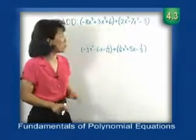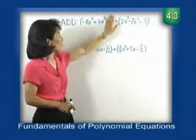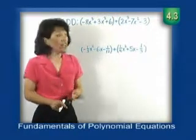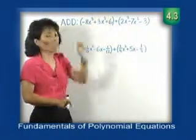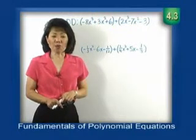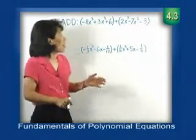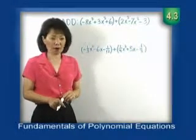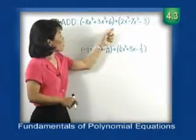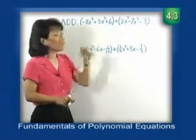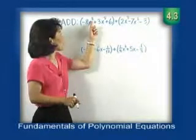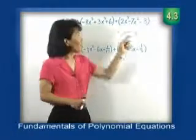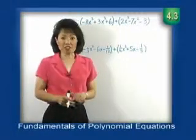Just to review a few terms: if there are only two terms in our polynomial, that's a binomial, and if we only had one term in our polynomial, that's called a monomial. Also, the degree of a polynomial is the highest power. So in our first trinomial, the degree is 3. Similarly, in our second polynomial, the degree would also be considered 3.